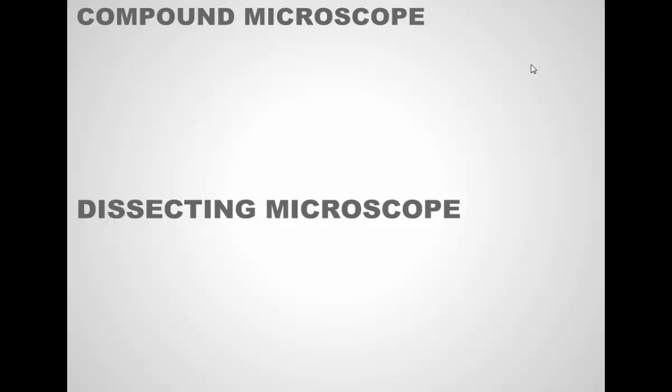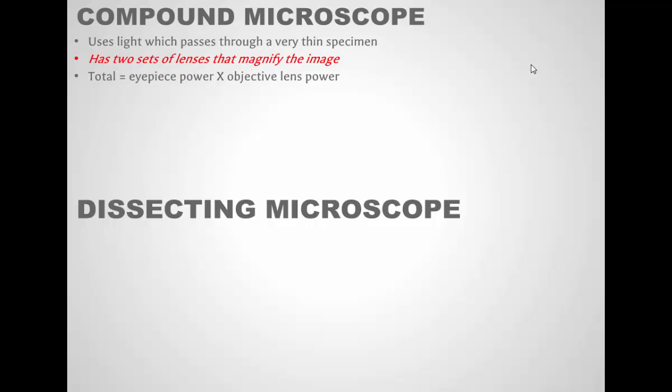So today we have a couple different microscopes that we will use. We have the compound microscope. The compound microscope uses light - it's a light microscope in which light passes through very thin sample through multiple lenses so that it's magnified. The compound microscope that we use has two sets of lenses that magnify the image: the eyepiece and the objective. Those are the two lenses that magnify the image. We calculate the power, the total amount of magnification, by multiplying the power of the eyepiece times the power of the objective. That gives us the total magnification.